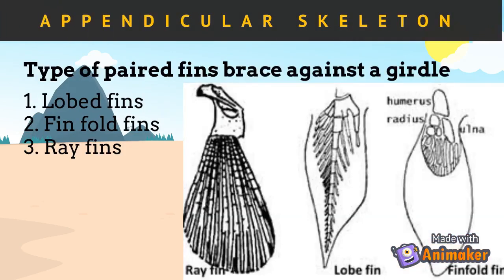The lobe fins, found in sarcopterygians such as lungfish, have a fleshy proximal region and a distal membranous component reinforced by fin rays. The finfold fins, found in cartilaginous fish, have a broad base. Ray fins have a reduction of basal elements with increased flexibility and are found in modern teleosts or actinopterygians.